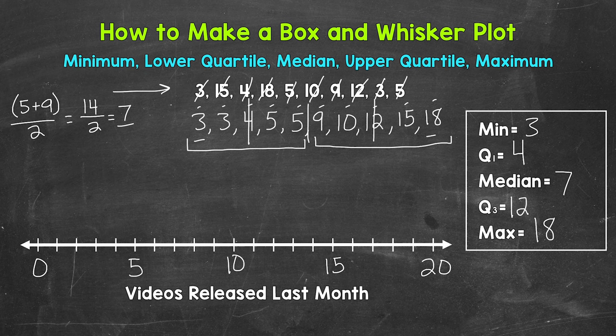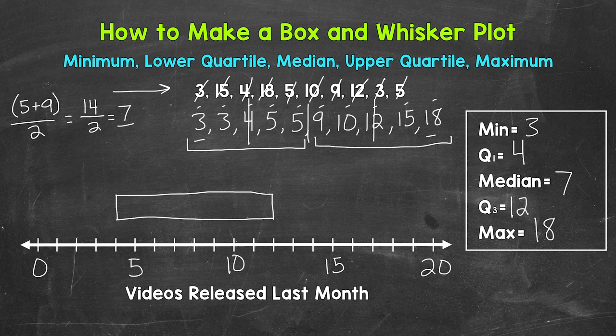Now let's create the box of the box and whisker plot. We will need the first quartile and third quartile. The first quartile is 4. The third quartile is 12. So let's create this box or rectangle here. This is the box of the box and whisker plot. It goes from the first quartile to the third quartile. Then inside the box, we have the median or second quartile. So the median is 7. So we draw a line here for the median.